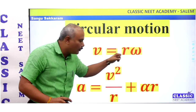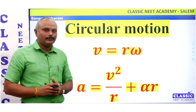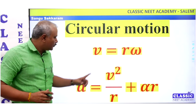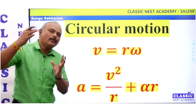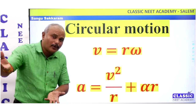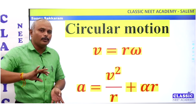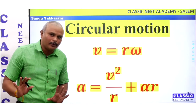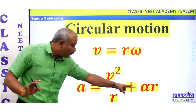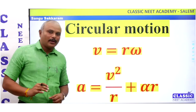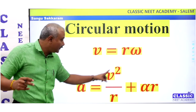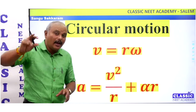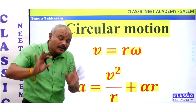So, v equal to r omega. Sometimes it is uniform circular motion, non-uniform circular motion. Actually, it is non-uniform circular motion. What is alpha? Alpha is also omega. What is the angular velocity? Angular velocity is constant.